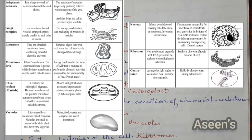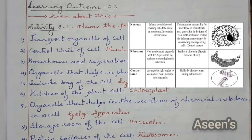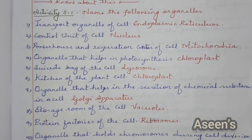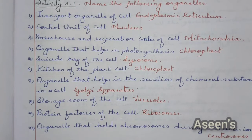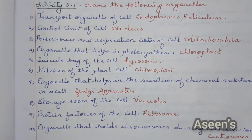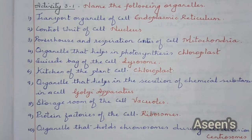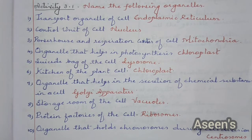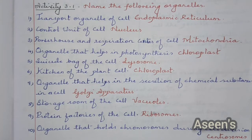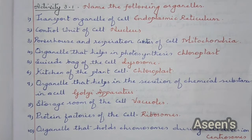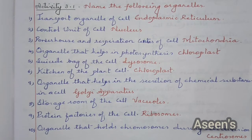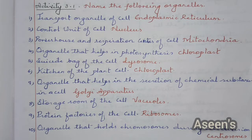Then comes Activity 3.1: name the following organelles. As you can see, we have two colors — blue and red. Blue stands for the question and red for the answer. Transport organ of the cell: endoplasmic reticulum. Control unit of the cell: nucleus. Powerhouse and respiration center of the cell: